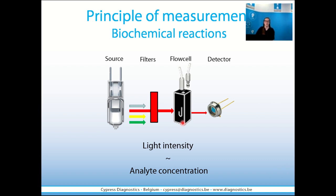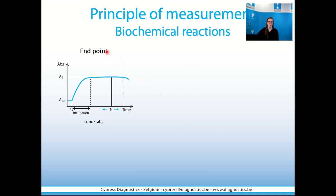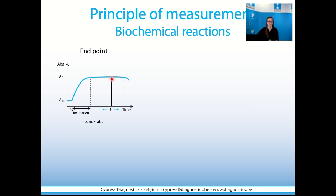There are three biochemical reactions we would like to discuss. The first one is an endpoint reaction. When no sample is added to our reagent, we have a very small absorbance. At time zero, when sample is added to our reagent, you will see a sudden increase in absorbance. Specifically for endpoint reactions, we will see that the color reaction will stabilize. It is at this time point that we will measure the absorbance of the sample. The concentration of the analyte will be calculated with this absorbance.